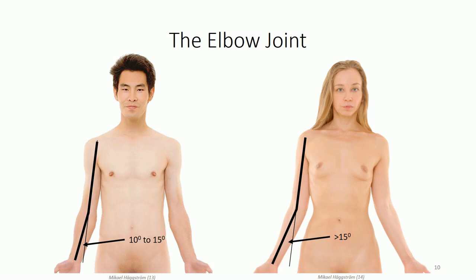An anterior view gives us an appreciation of what is known as the carrying angle. In extension, the forearm deviates laterally as a result of the bony architecture of the joint surfaces. It gets its name from the fact that it accommodates the increased width of the hips to allow greater clearance during arm swing while walking. The carrying angle is typically around 10 degrees in males and over 15 degrees in females, which makes sense given that the female pelvis is significantly wider on average. Note that the carrying angle disappears when the forearm is moved into elbow flexion to closely align with the shaft of the humerus.